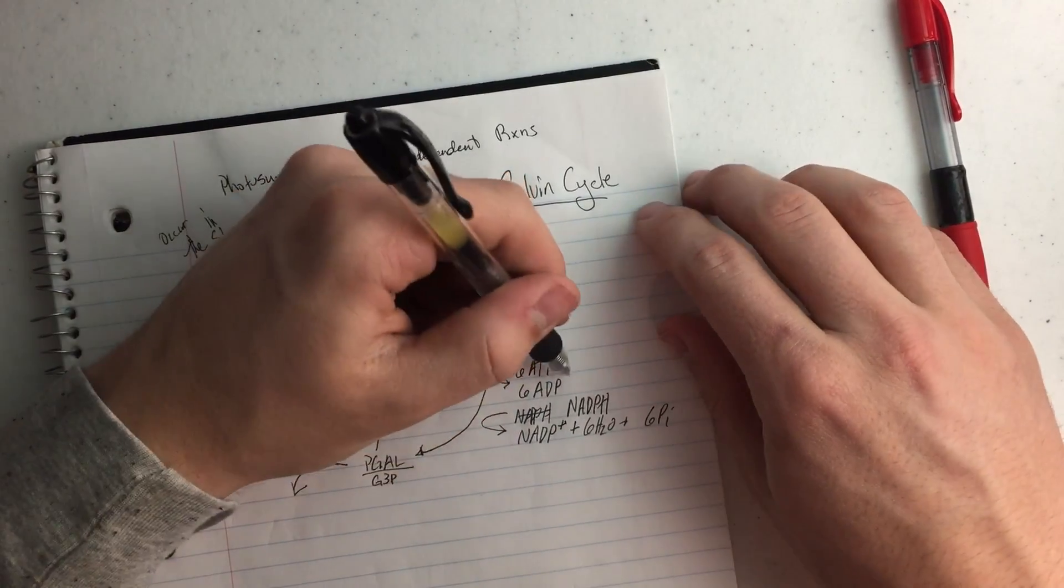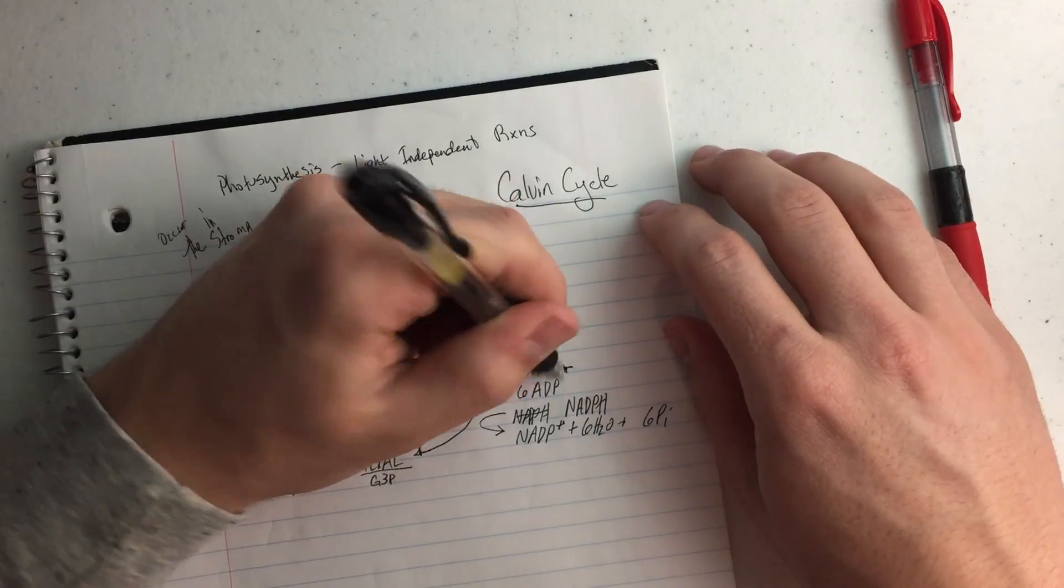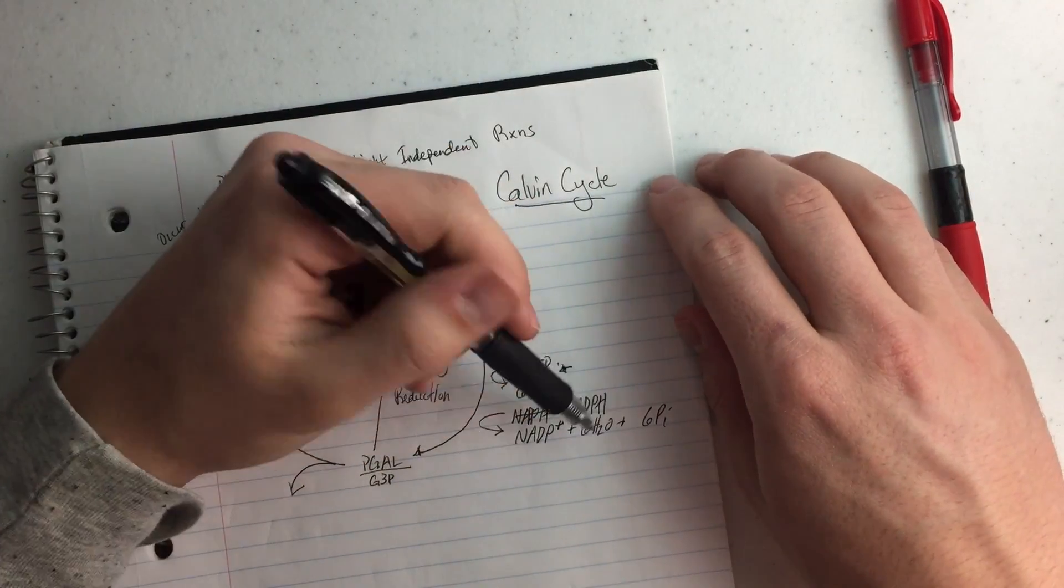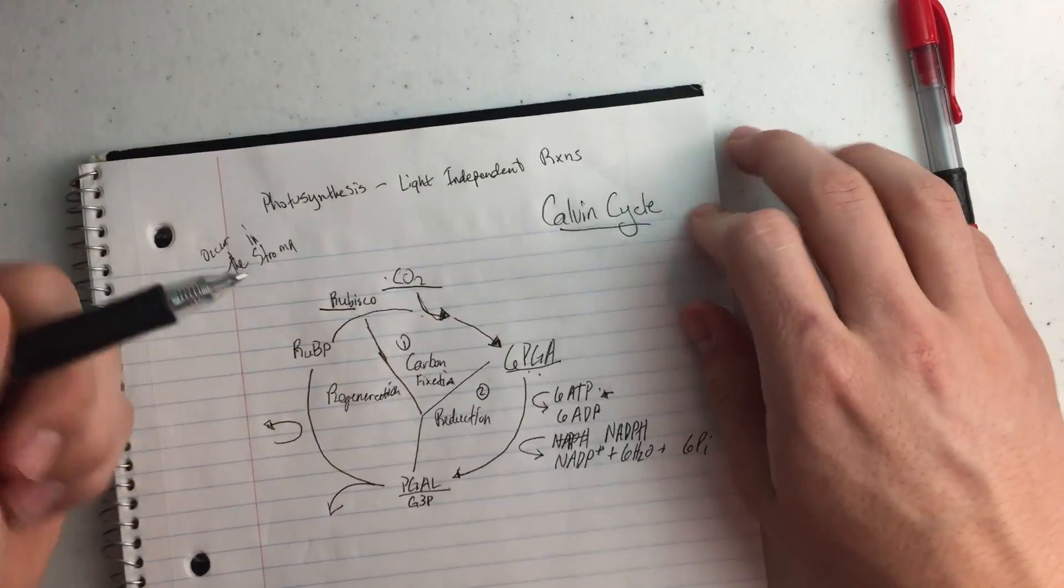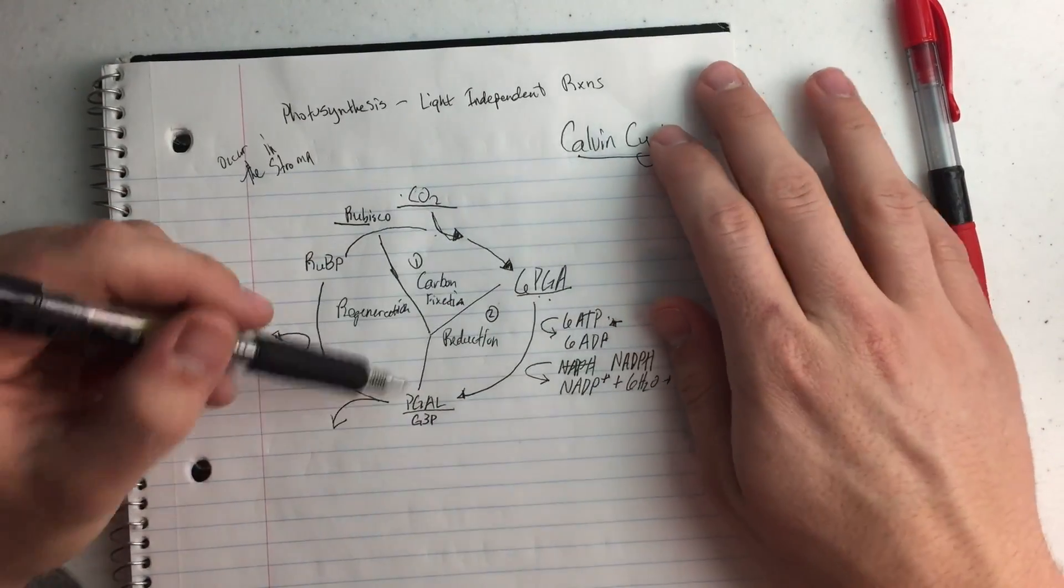Okay, so now that we've done this, we've turned ATP into ADP, and NADPH into NADP+, the things we started with in the light-dependent reactions, and then we have PGAL or G3P.